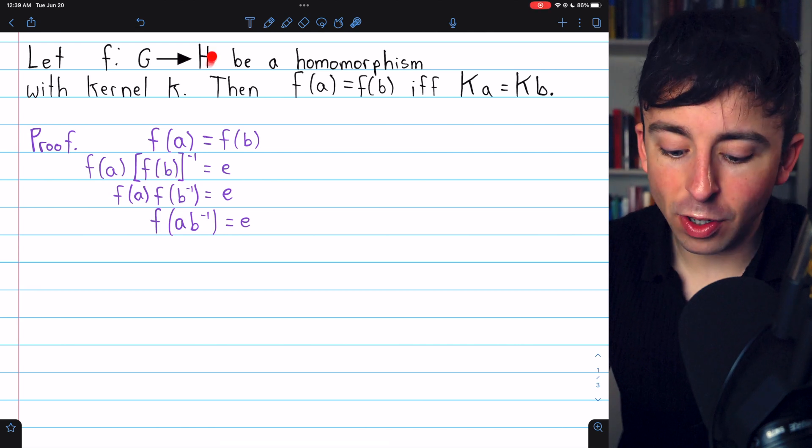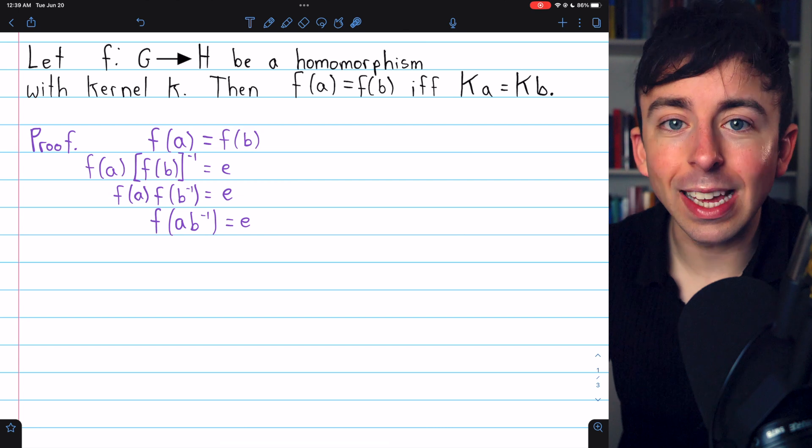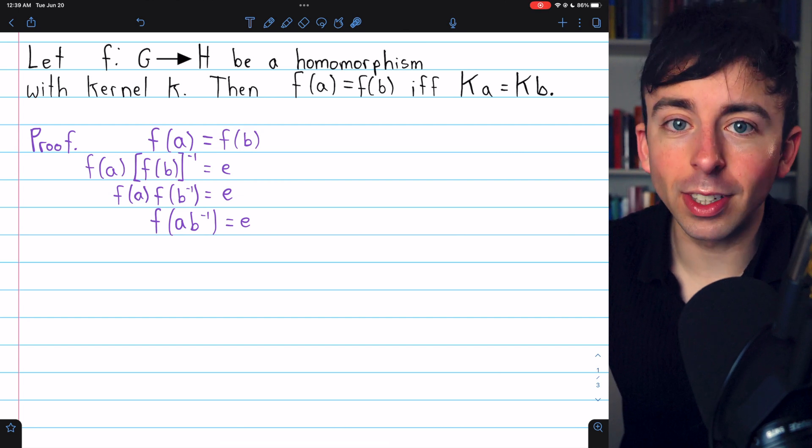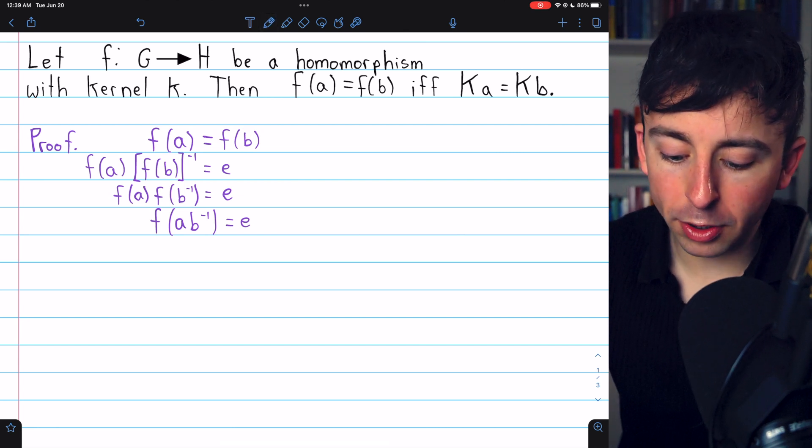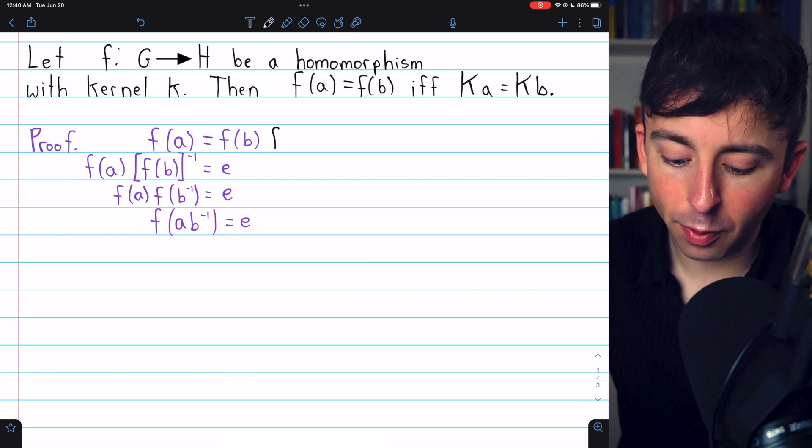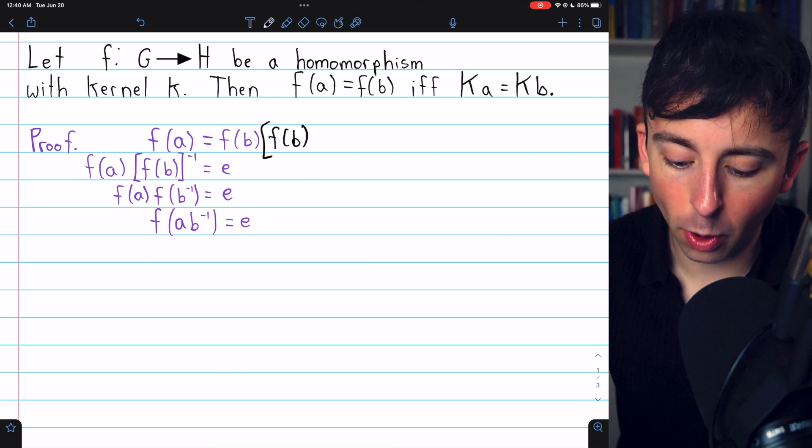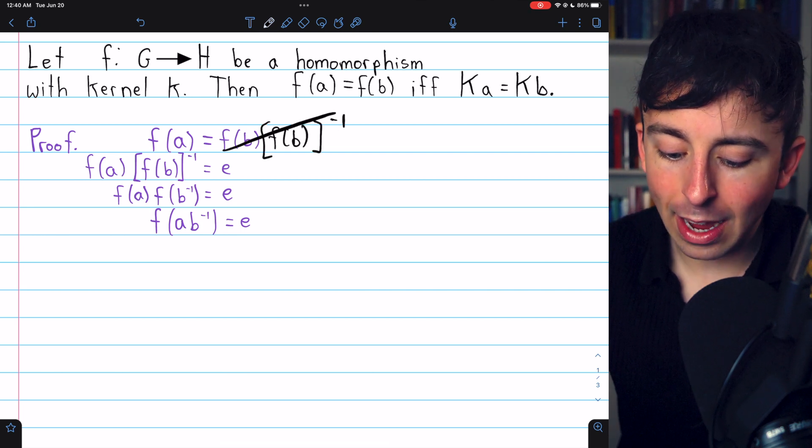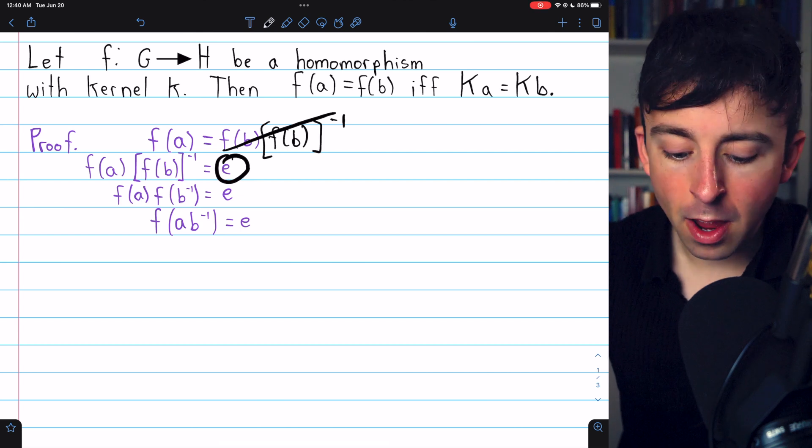Remember that H is a group, and F(b) is in H, so it certainly has an inverse. And when we multiply on the right by F(b) inverse, of course, those things just cancel out, and we're left with the identity on the right.